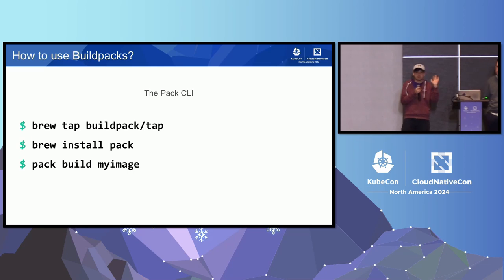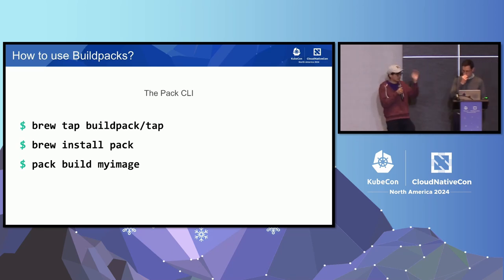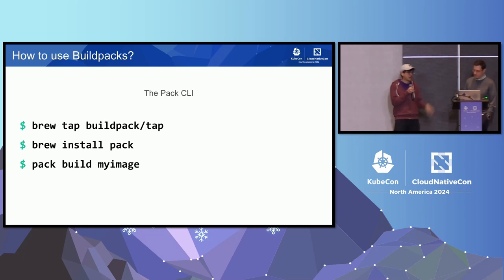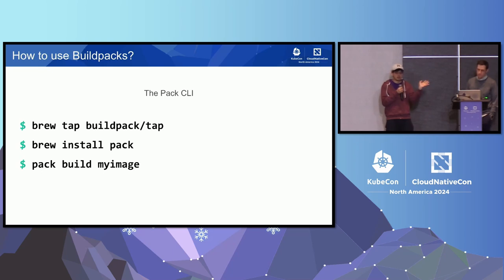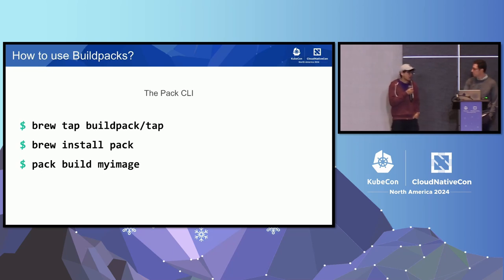The easiest way to get started is through the Pack CLI. If you go to the CNCF Landscape and click through onto our icon, it'll take you to the Pack repo. You can use Brew on Linux and Mac, download directly from GitHub, or use binaries from various Linux distro package managers. Then you can just run a pack build with the name of the image and you're good to go.